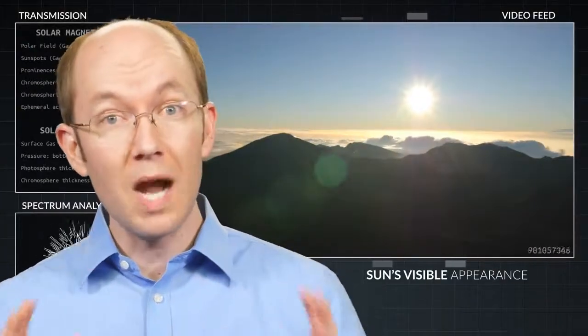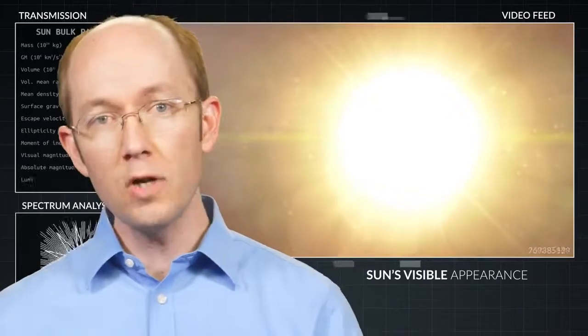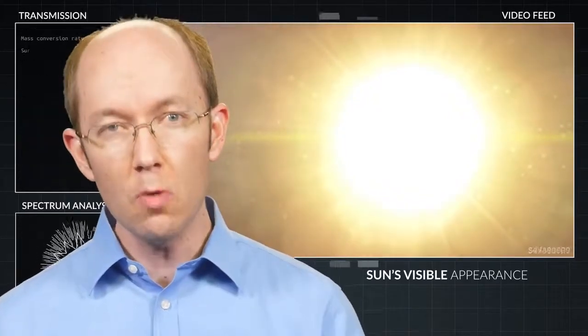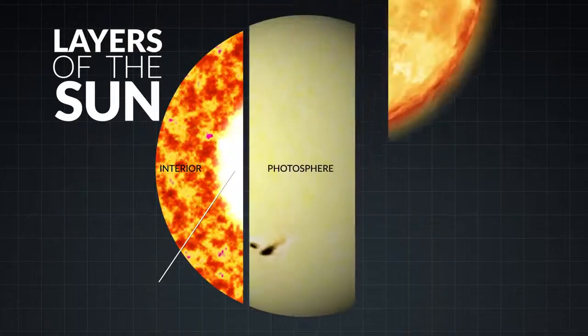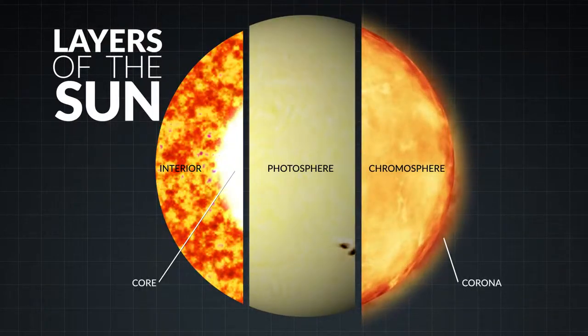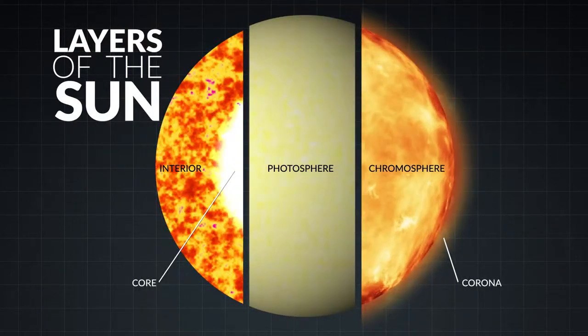From our perspective on Earth, the Sun appears as a bright yellow disk. The part of the Sun that we can see shining so brightly is called the photosphere. This layer is often described as the visible surface of the Sun because it's the outermost opaque layer, restricting our view of the Sun's deeper layers.